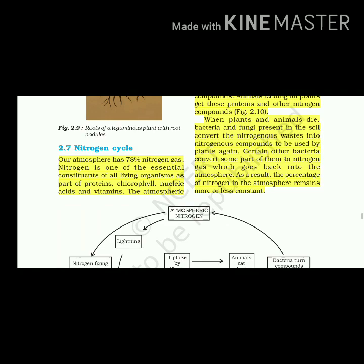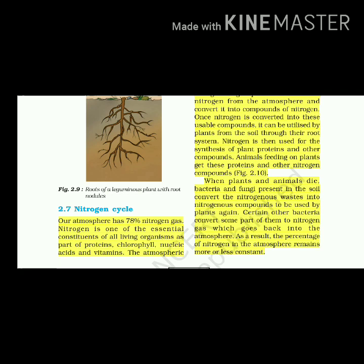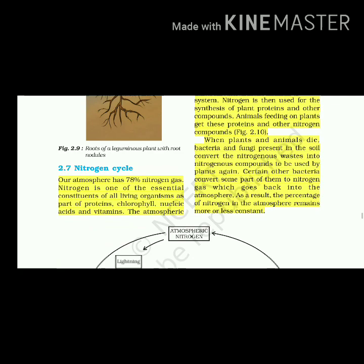When plants and animals die, bacteria and fungi present in the soil convert nitrogenous wastes into nitrogenous compounds to be used by plants again. Certain other bacteria convert some part of them into nitrogen gas which goes back into the atmosphere. As a result, the percentage of nitrogen in the atmosphere remains more or less constant. This is the nitrogen cycle.